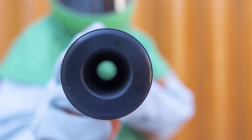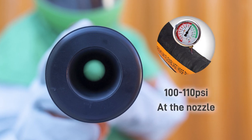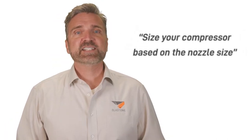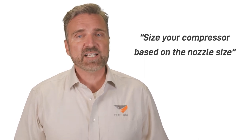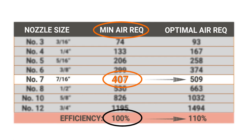Returning to the orifice once again, a standard rule of thumb is your air pressure should be 100 to 110 psi at the nozzle. This allows for maximum cleaning of the surface without over-blasting. The larger the orifice, the more CFM is needed to maintain this pressure. A practical strategy is to size your compressor based on the nozzle size being used. Here is a chart that shows the optimal CFM based on nozzle size. The recommendations listed take into account the CFM lost by the chain of equipment along the way. Therefore, if you are seeking 100 psi while using a number seven blast nozzle, your compressor needs to deliver a minimum output of 312 CFM.